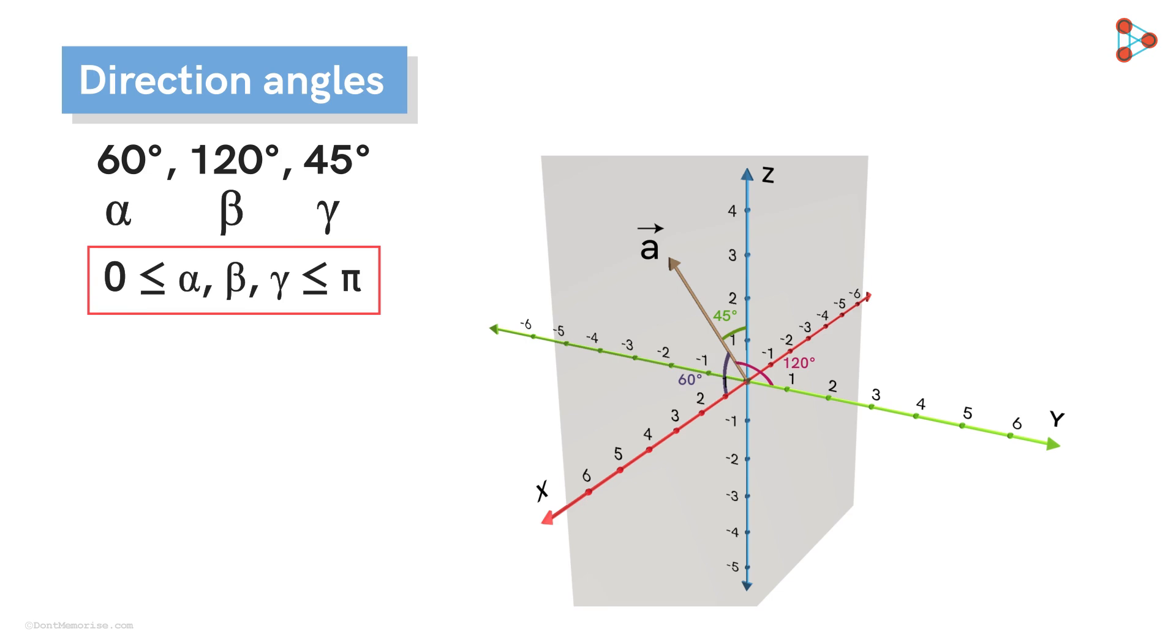To simplify things for our convenience, we want every vector on a 3D plane passing through the origin to have a unique set of direction angles. I will elaborate more on this in a moment.